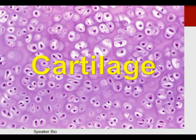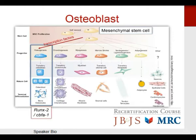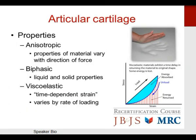The two types of cartilage include hyaline cartilage — the articular cartilage, type 2 collagen — and fibrocartilage — the non-articular cartilage, type 1 collagen. Articular cartilage is avascular, aneural, and alymphatic, giving it very limited healing potential. Its nutrition comes from diffusion from the synovial fluid. Properties include being anisotropic — properties vary with direction of force — biphasic, having both liquid and solid properties, and viscoelastic, meaning time-dependent strain varying by rate of loading.